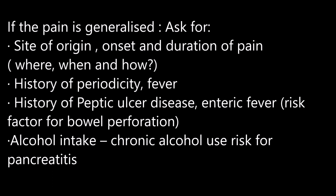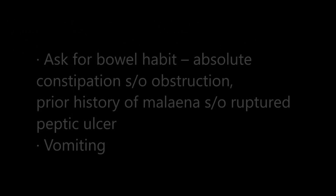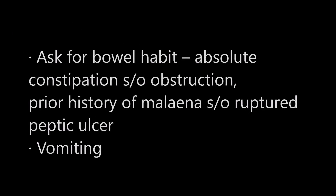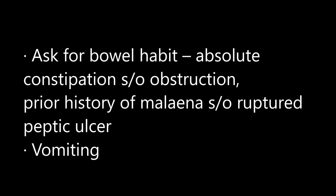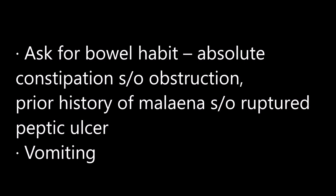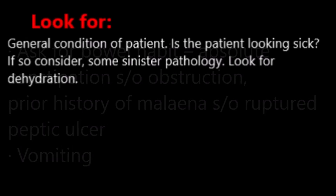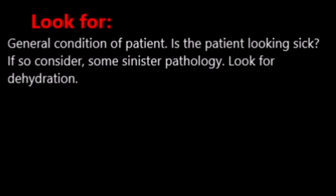If the pain is generalized, we should ask about the site of origin, onset and duration of pain — where, when, and how. Ask about history of periodicity, fever, history of peptic ulcer disease, enteric fever, risk factors, bowel habits, alcohol intake, and chronic alcohol use as a risk factor for pancreatitis. Ask about bowel habit including absolute constipation suggestive of obstruction, and prior history of melena suggestive of peptic ulcer disease.